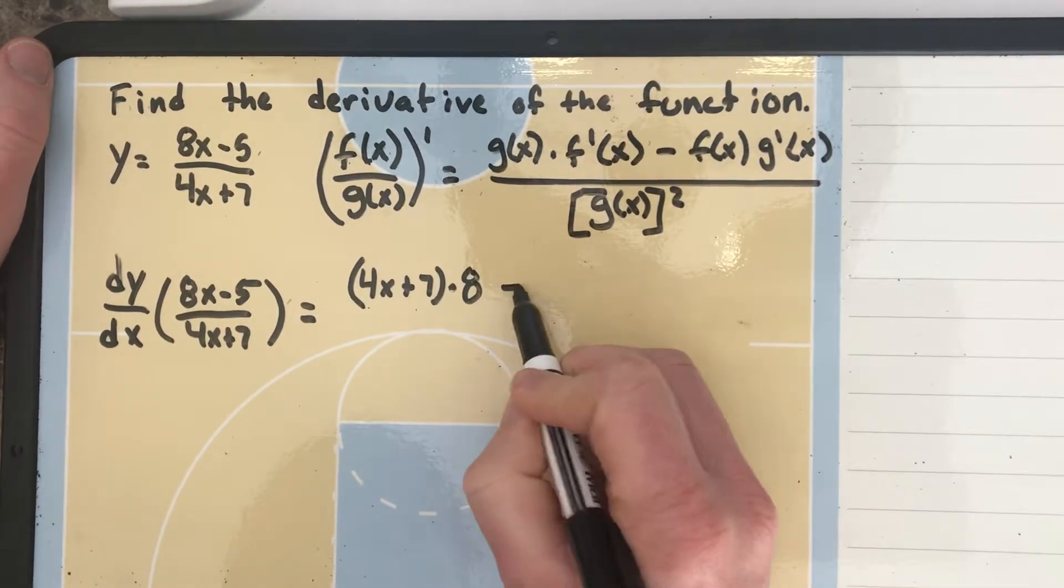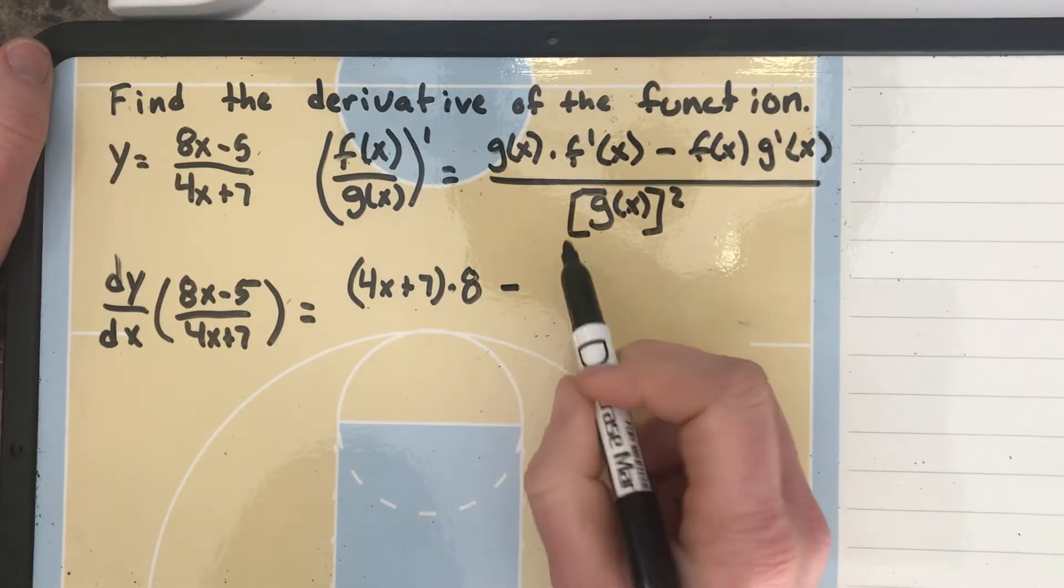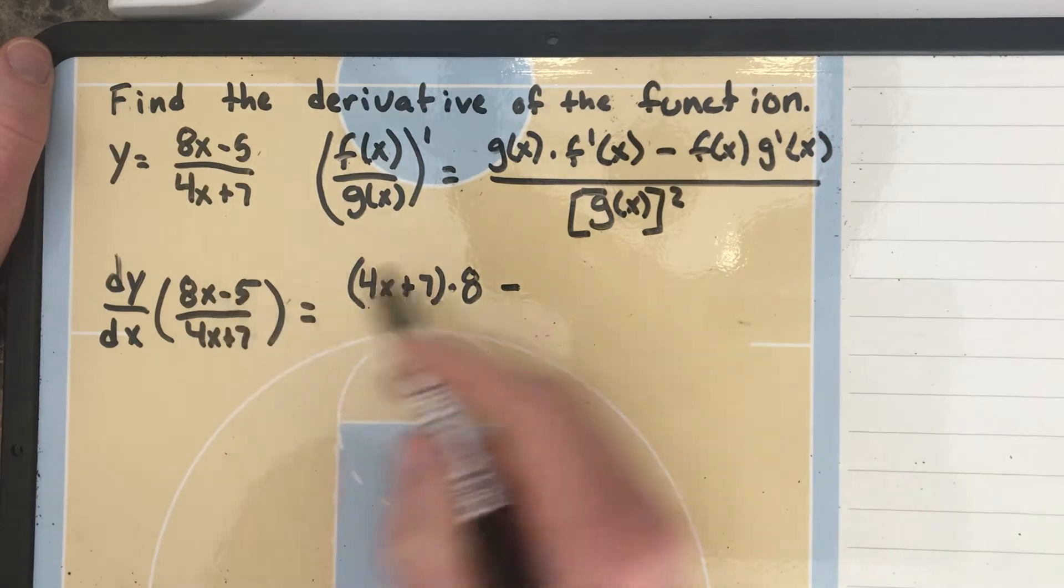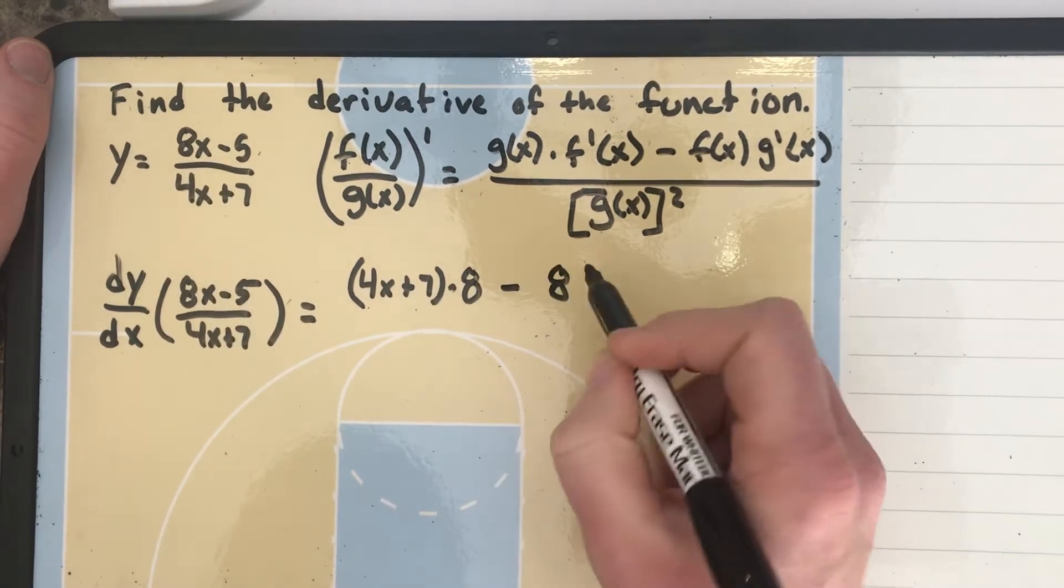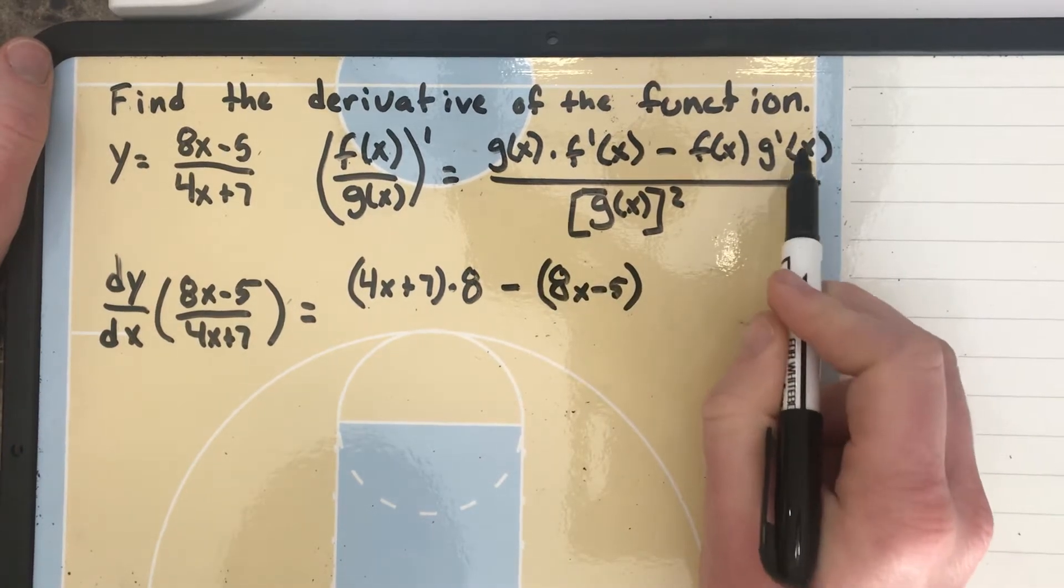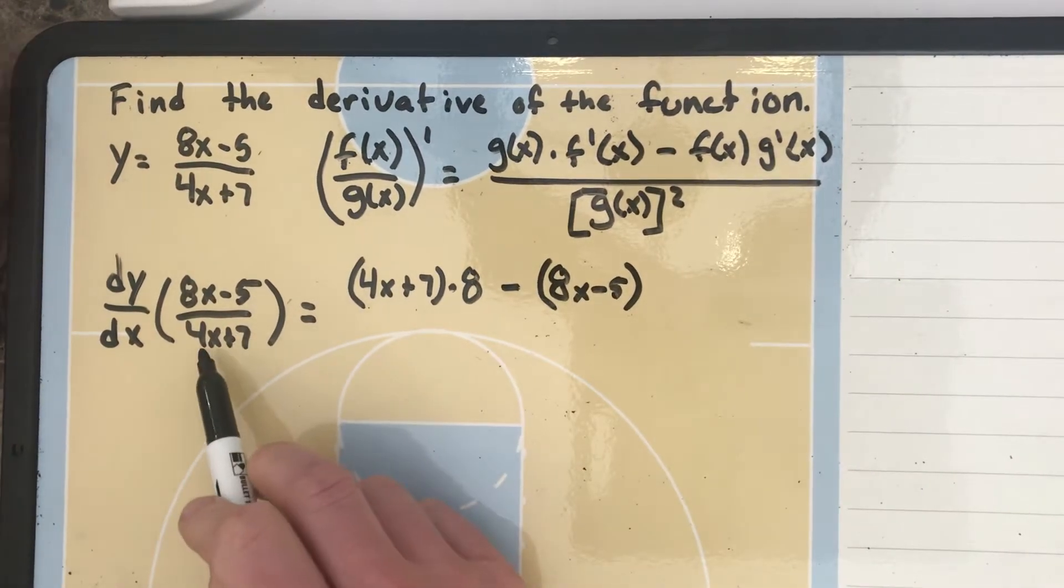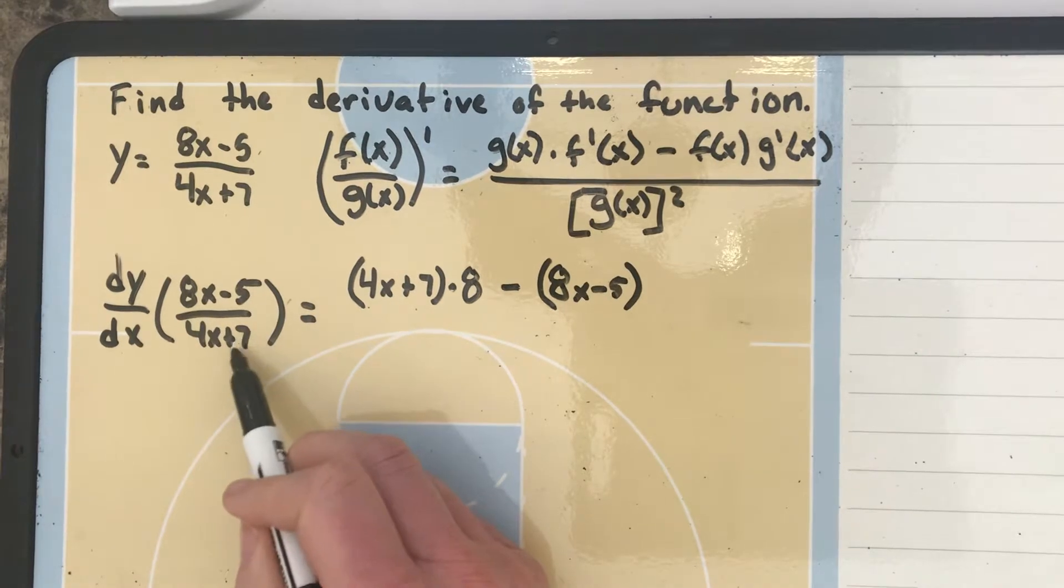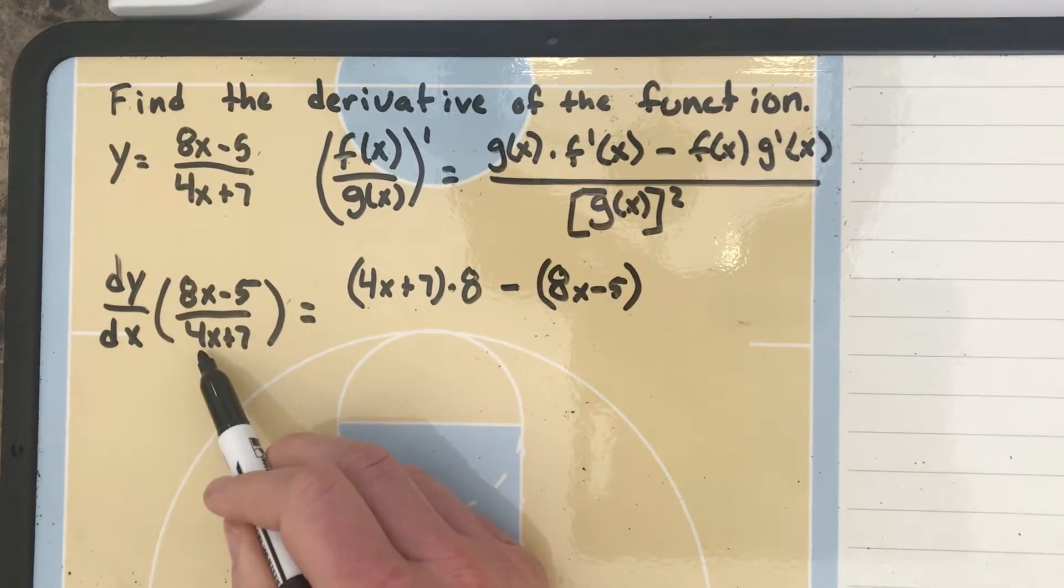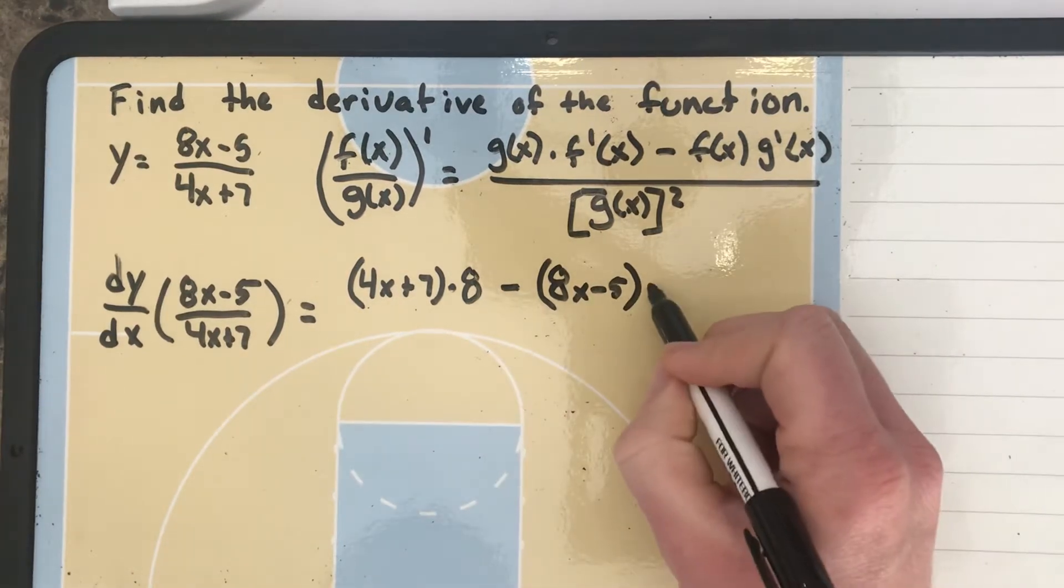And then we're going to say minus. And we'll write the original function of f of x, which is the top one. So that's 8x minus 5. And we'll take the derivative of the bottom. The derivative of the bottom for 4x plus 7, 7 cancels when you do the derivative to 0. And then 4x is just going to be 4. So we'll have that times 4.